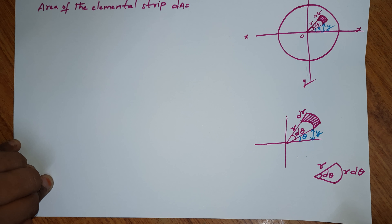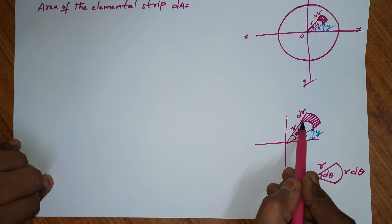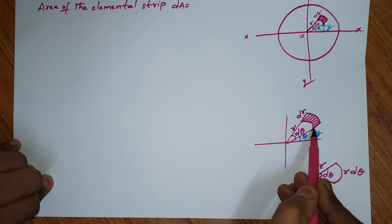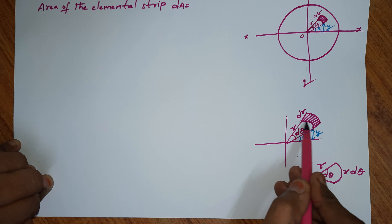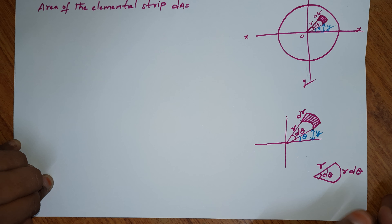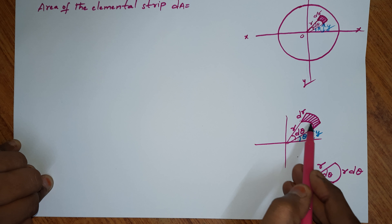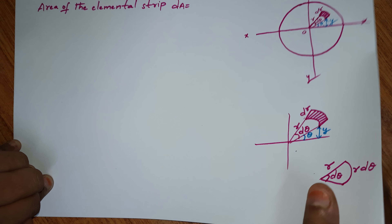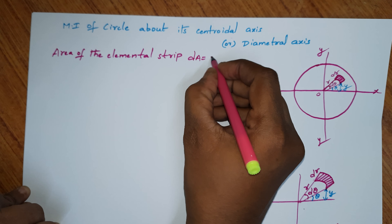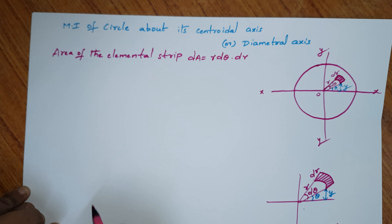To find the area of this rectangle strip, we multiply length into breadth. One side is r·dθ — using the arc length formula: radius into corresponding angle gives r·dθ. The other side is dr. So the area of the elemental strip dA = r·dθ·dr.